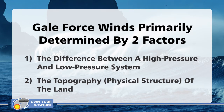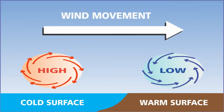Let's start with the high/low pressure difference. Near the coast, the cold waters of the ocean take much longer to warm up due to solar radiation than the warm surface of the land. As a result, over the cold water surface a high pressure system occurs, while at the same time over the warm land surface a low pressure system occurs.